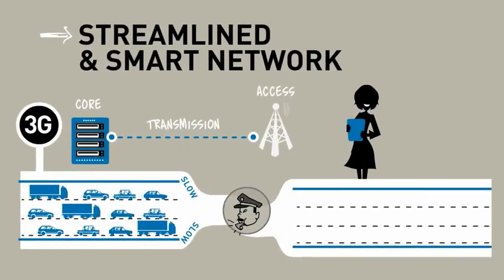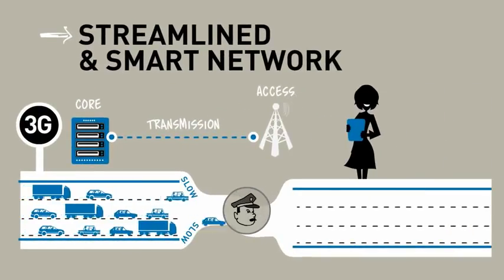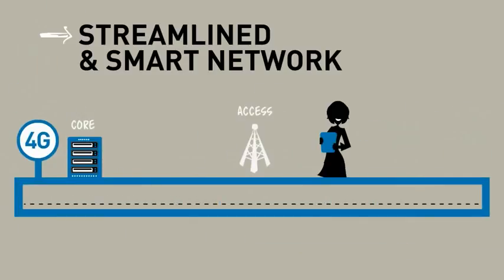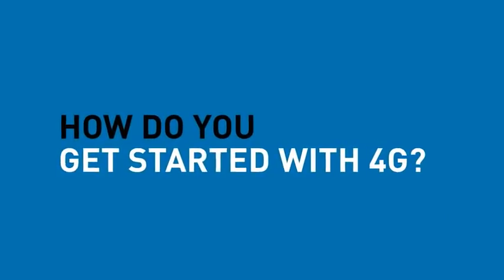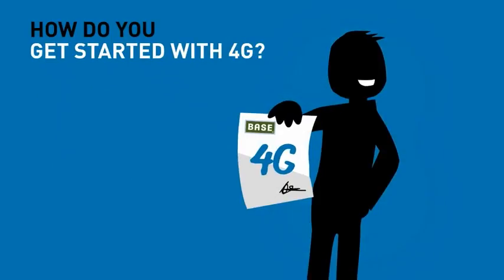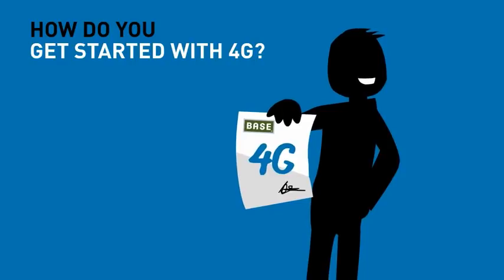And finally, 4G's network architecture is smarter and flatter. When you connect, you're no longer transferred to a controller that regulates the traffic flow. Because of 4G's smart network architecture, antennas will immediately find the best way for you to connect.